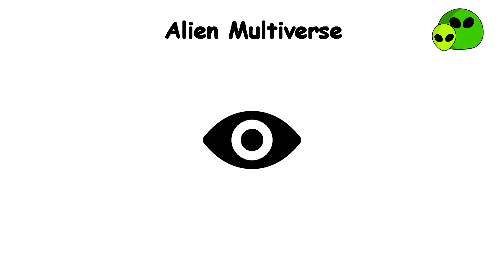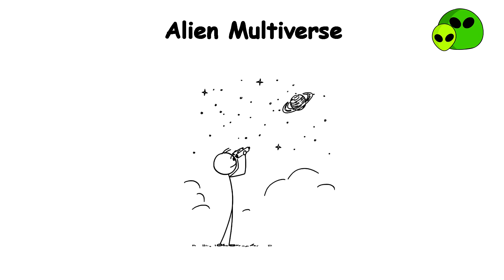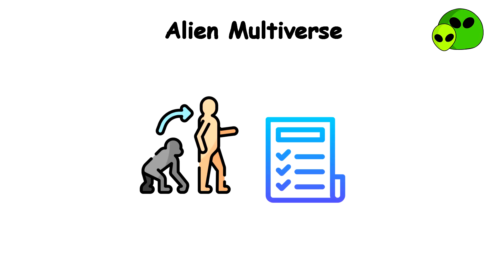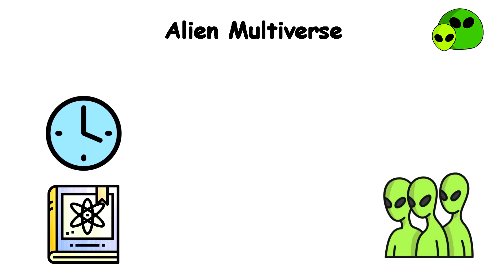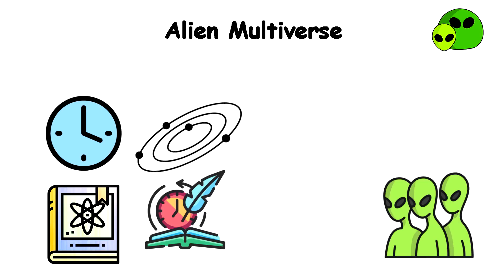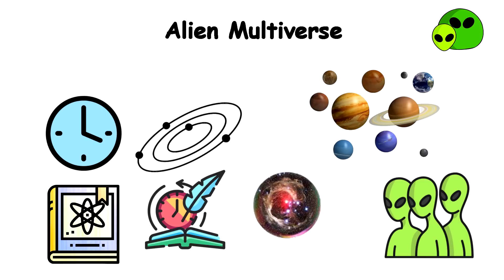Alien Multiverse. According to this view, the universe we observe is just one of many parallel universes, each populated by life and intelligence that evolved under different conditions. Alien universes may have varying laws of physics, dimensions of time and space, and histories entirely independent from our universe.